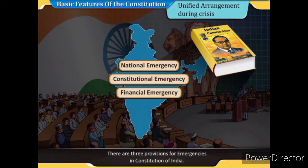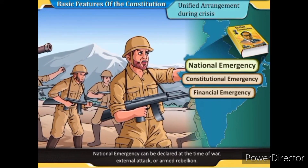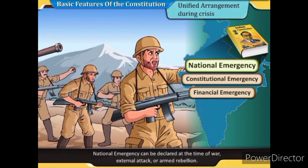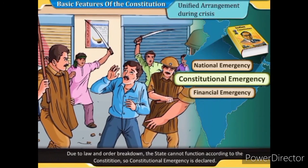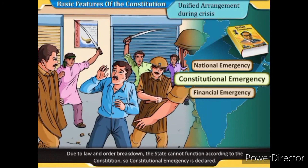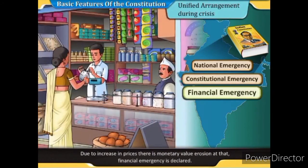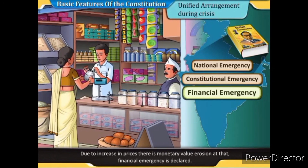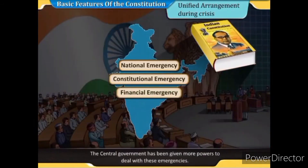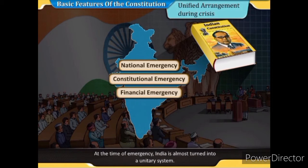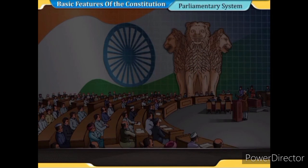There are three provisions for emergencies in the Constitution of India. First, a national emergency can be declared at the time of war, external attack, or armed rebellion. Second, if law and order breaks down and the state cannot function constitutionally, a constitutional emergency is declared. Third, due to increase in prices causing monetary value erosion, a financial emergency is declared. The central government has more powers during these emergencies, and India is almost turned into a unitary system.